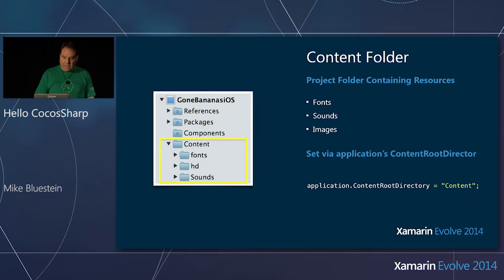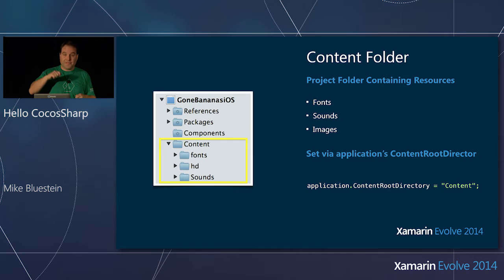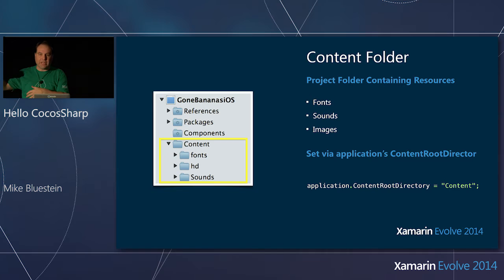One of the other things you're doing in the application delegate is setting up the content folder. The content folder is where you put all your resources — it's just a folder in your solution. You can set it up in Visual Studio or Xamarin Studio. This is where you put font files like bitmap fonts, sounds, audio for effects or background music, sprite sheets, images — all your resources. Setting it up is as simple as setting a property on your application.